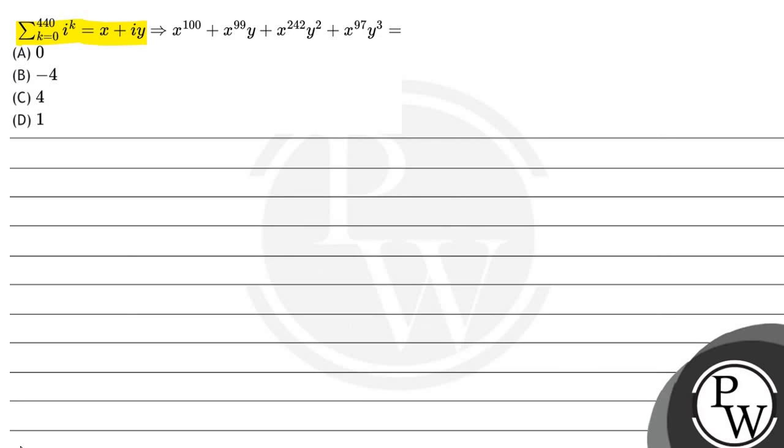Then we need to find the value of x^100 + x^99*y + x^242*y^2 + x^97*y^3. The options are: A is 0, B is minus 4, C is 4, and D is 1.